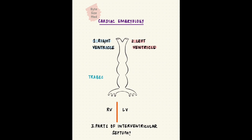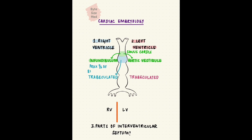The ventricles have a trabeculated or rough inflow portion and smooth outflow tracts — the infundibulum on the right and the aortic vestibule on the left. These smooth parts come from the middle third of the bulbus cordis, also called the conus cordis. The proximal third of the bulbus cordis forms the rough trabeculated part of the right ventricle, while the primitive ventricle forms the trabeculated part of the left ventricle. The interventricular septum separates the two and has a membranous part above and a muscular part below.